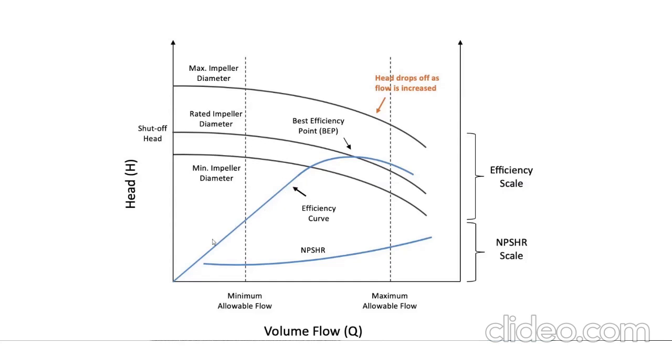Then we have the blue efficiency curve, and at the bottom, there is the NPSHR curve. For centrifugal pumps, as the flow demand increases, the rated head of the pump decreases. This point is the best efficiency point—the highest point on the rated impeller where maximum efficiency is achieved.